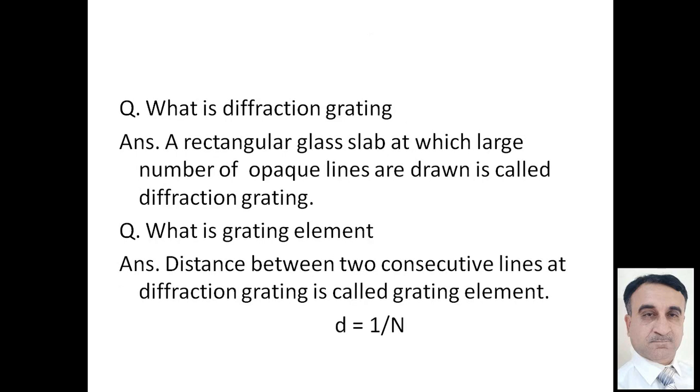The next question is what is diffraction grating? A diffraction grating is a rectangular glass slip on which a large number of lines are drawn. The distance between two consecutive lines at diffraction grating is called grating element. D is equal to 1 over N, where N is the number of lines per centimeter ruled on the diffraction grating.